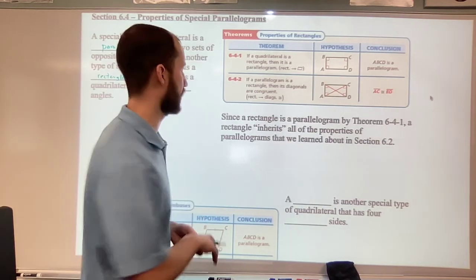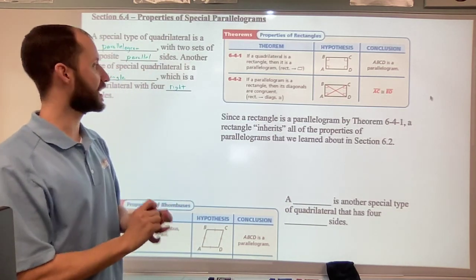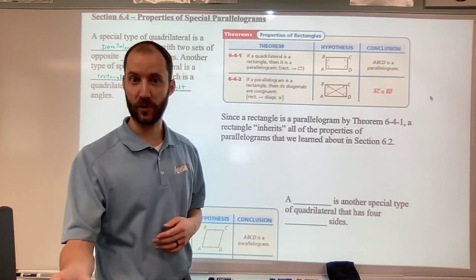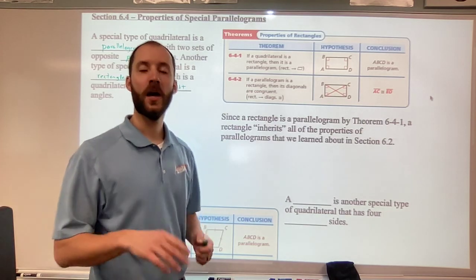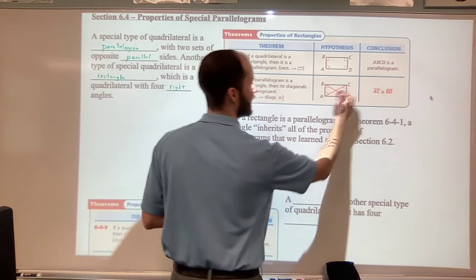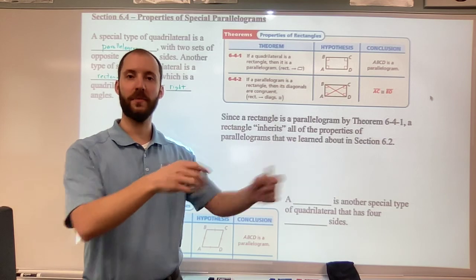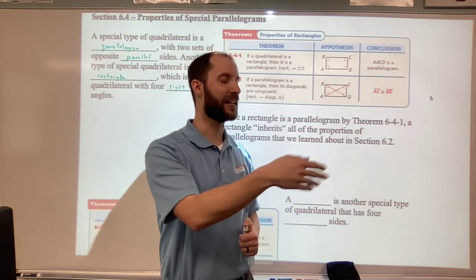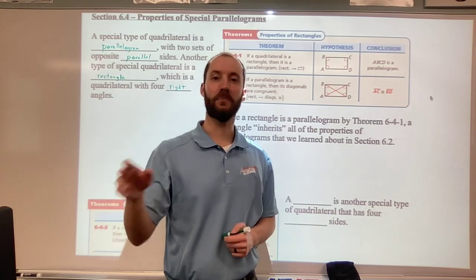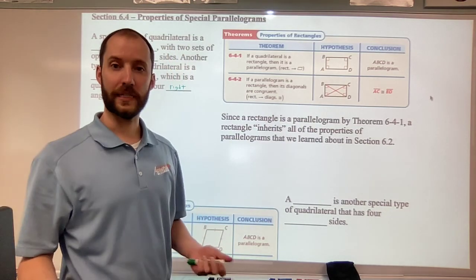So we have that symbolic logic - if rectangle, then parallelogram. Rectangles also have diagonals that bisect each other because it's a parallelogram. The diagonals bisect each other, but then the diagonals are also congruent to each other. So AC is congruent to BD. So if it's a rectangle, it's a parallelogram and it gets all of those properties. So opposite sides congruent, opposite angles congruent, consecutive angles supplementary, and diagonals bisect each other. But also those diagonals are congruent as well.